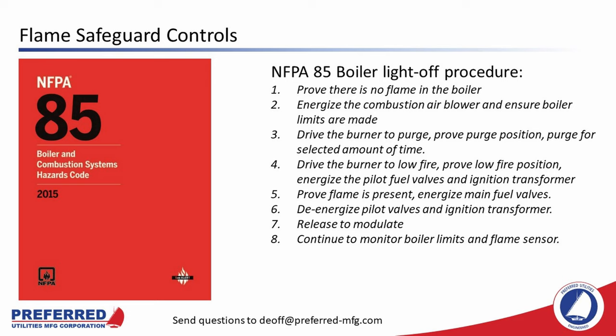After the furnace is completely purged, the flame safeguard will drive the burner to low fire, prove low fire position, energize the pilot fuel valves and ignition transformer, and then prove that the igniter flame is present before energizing the main fuel valves. Then the flame safeguard controller will de-energize the pilot valves and ignition transformer and release demodulate — which turns control of the fuel-air ratio over to a different controller. Once released, the flame safeguard continues to monitor the boiler limits and flame sensor.